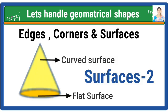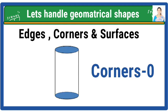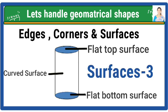A cylinder has 2 edges. A cylinder has not a single corner, means it has 0 corners, and 3 surfaces: 1 is curved surface and 2 are flat surfaces.